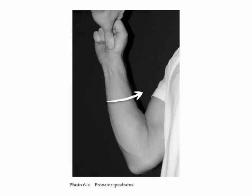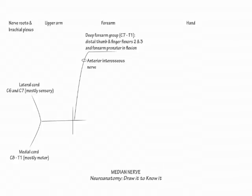Then demonstrate that you use pronator quadratus to pronate your forearm with your elbow in flexion. The last muscle of this group, flexor digitorum profundus 2 and 3, flexes the distal interphalangeal joints of the second and third digits.